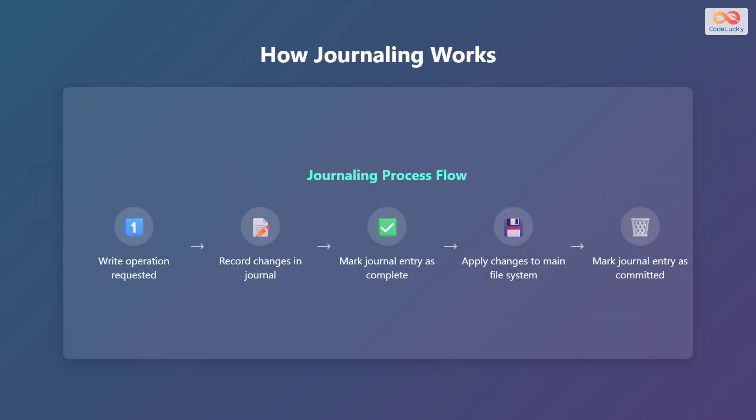Let's walk through how journaling actually works. First, a write operation is requested by the user or system. Second, the changes that the write operation will make are recorded in the journal. Third, the journal entry is marked as complete, indicating that the changes have been logged.